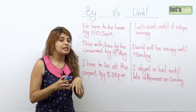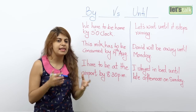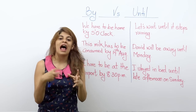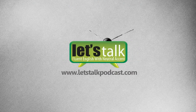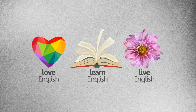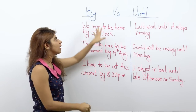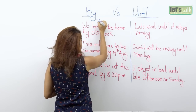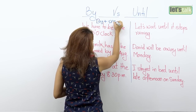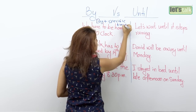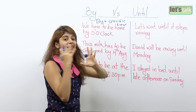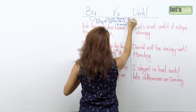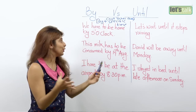We are going to look at the difference. Many people get confused and think that 'by' and 'until' can be used interchangeably, but that's not right. There is a difference and we are going to learn how to use them correctly. Let's first understand the word 'by' — it is always followed by a specific time, meaning 'not later than' that time.